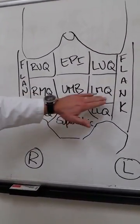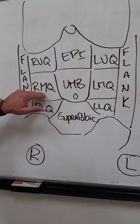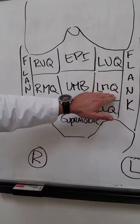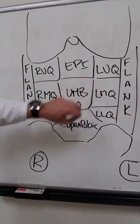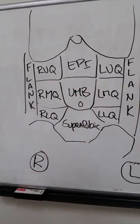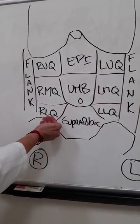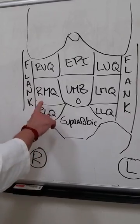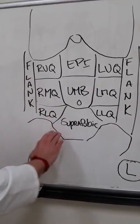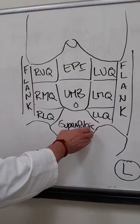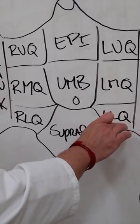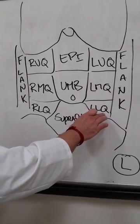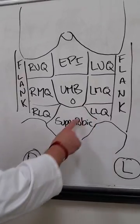Moving down to the next level, the right middle and left middle quadrants mainly have your ascending and descending portions of the colon. The umbilical area contains a large amount of your small intestines. The right lower quadrant has your appendix. Suprapubically you have the top of your bladder, and the left lower quadrant has the most inferior aspect of the descending colon as well as the sigmoid colon.